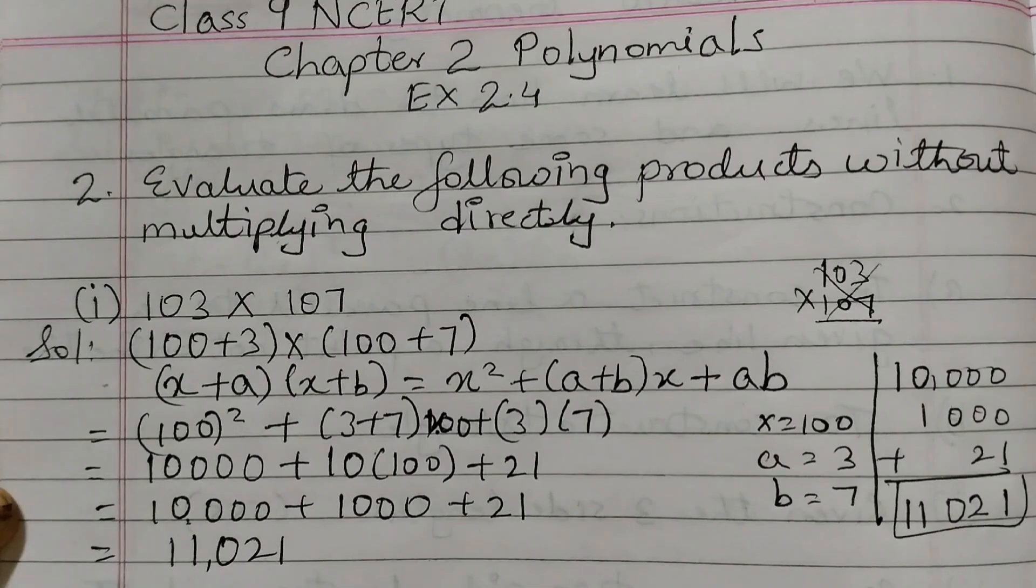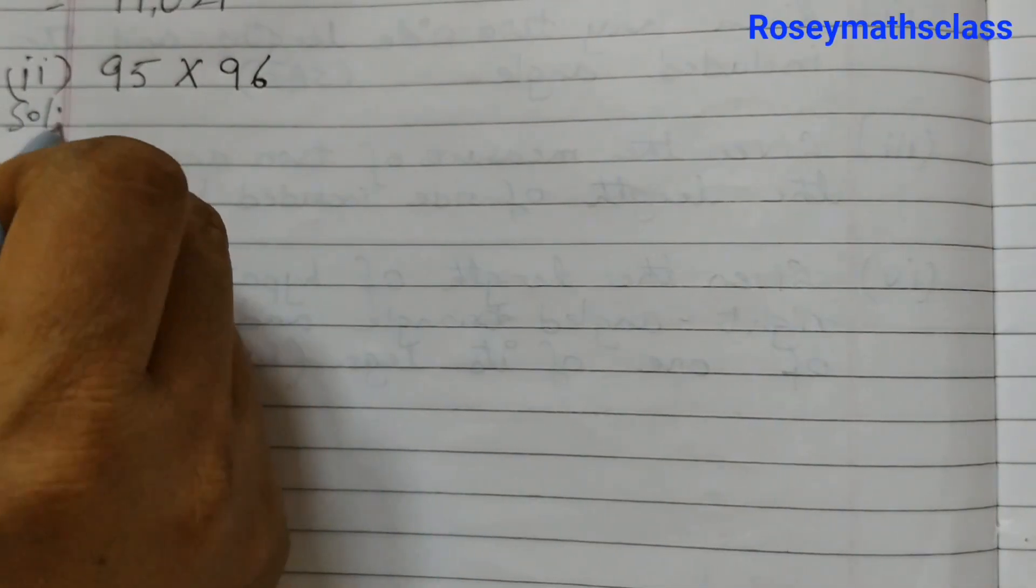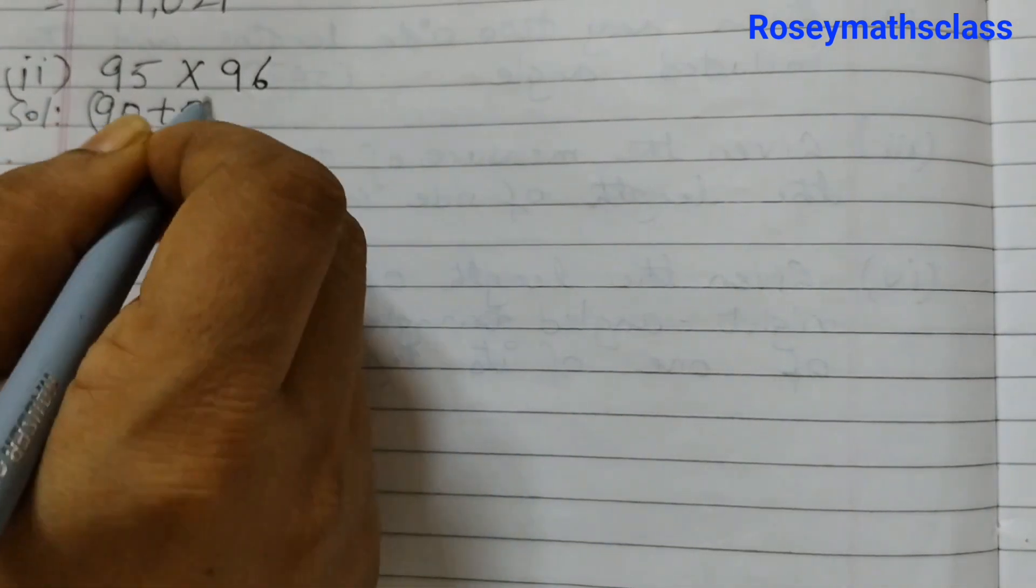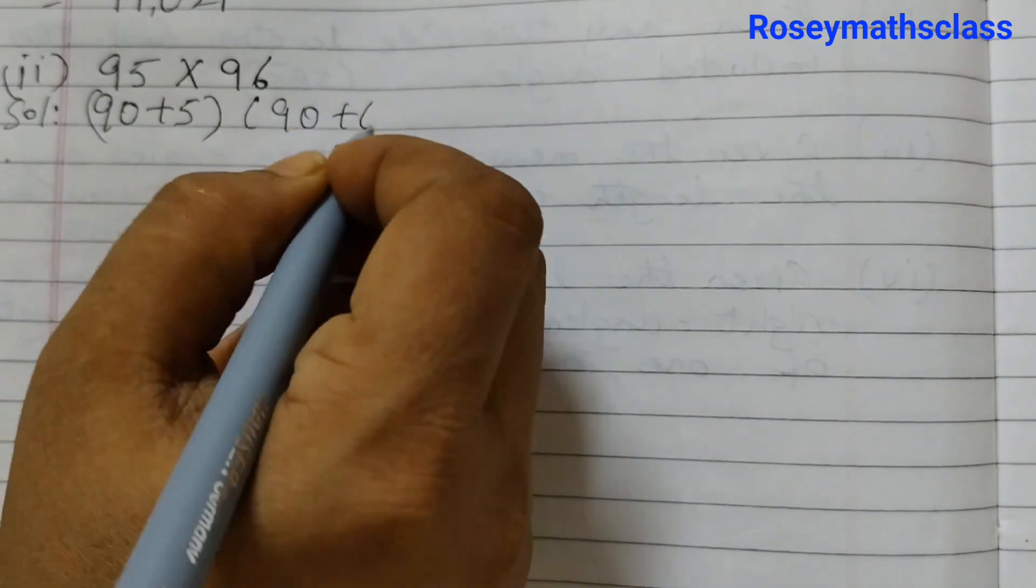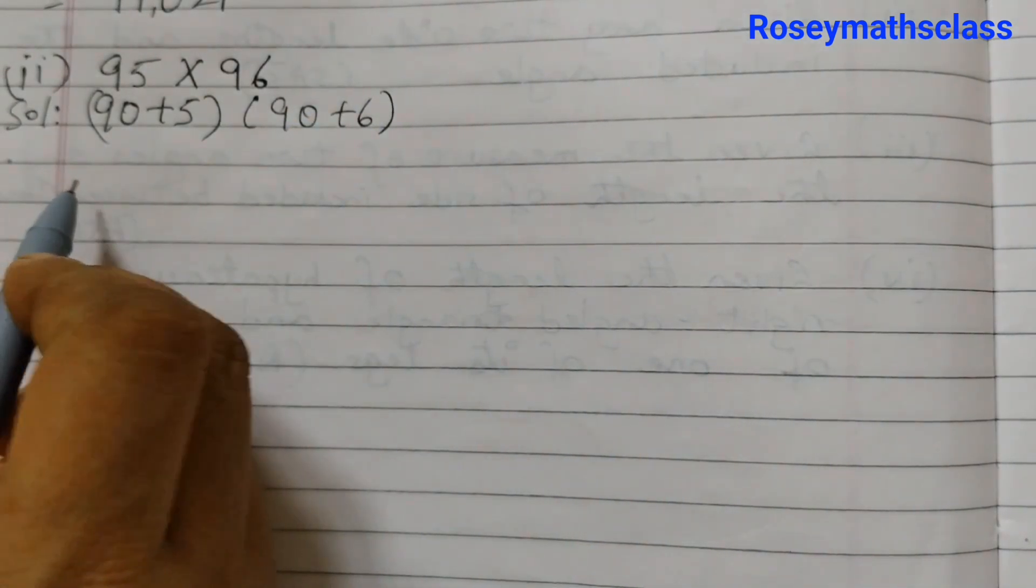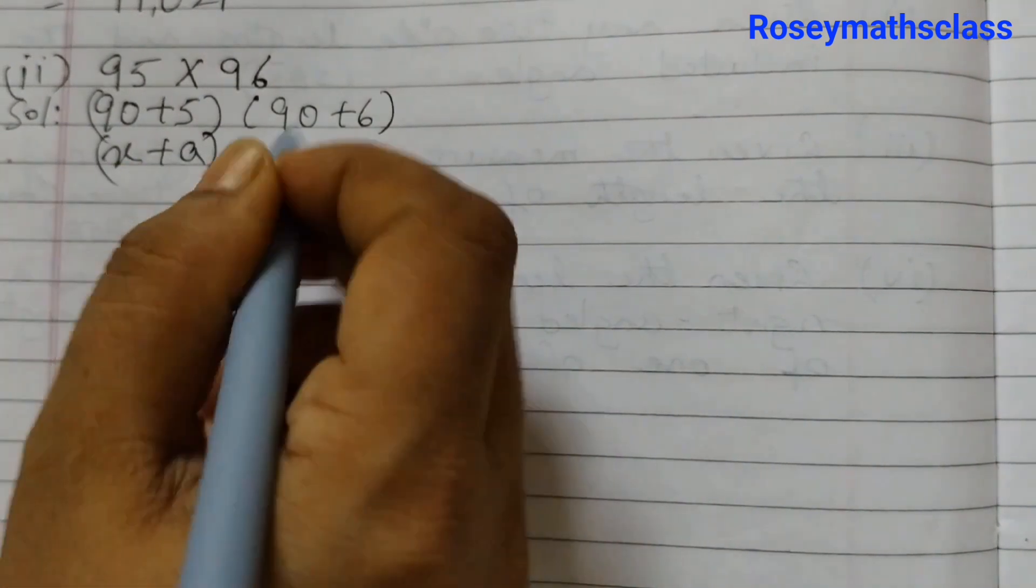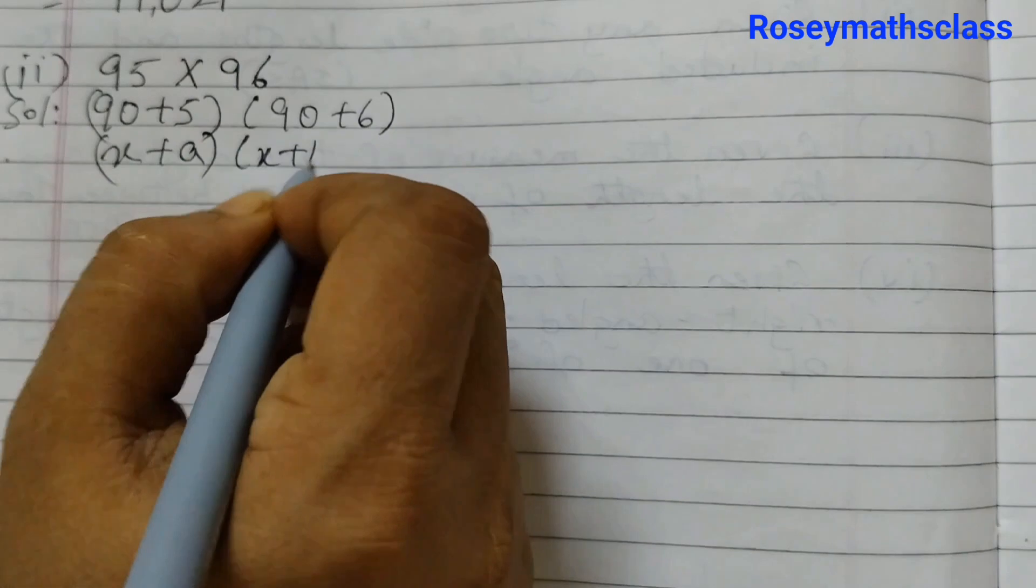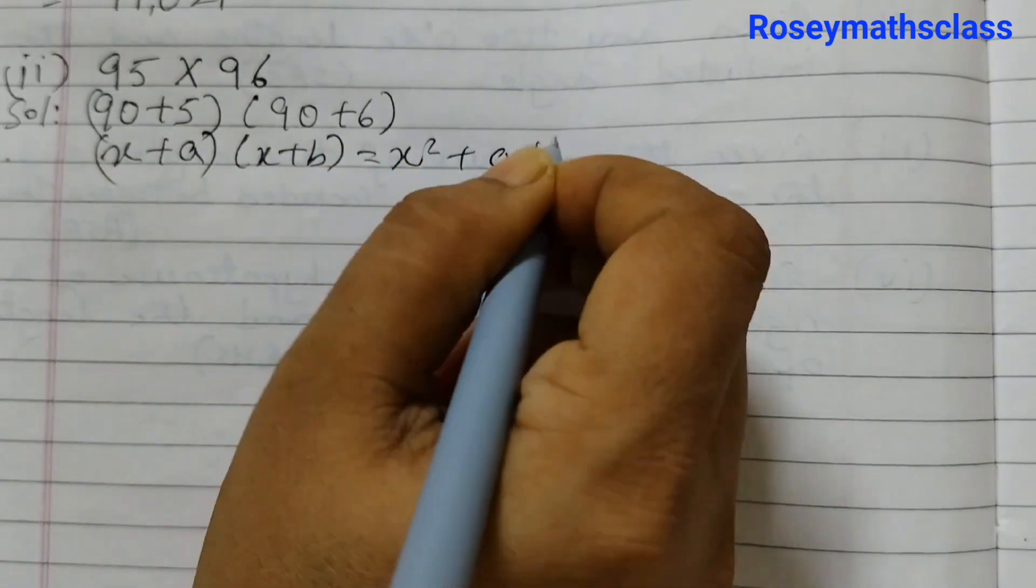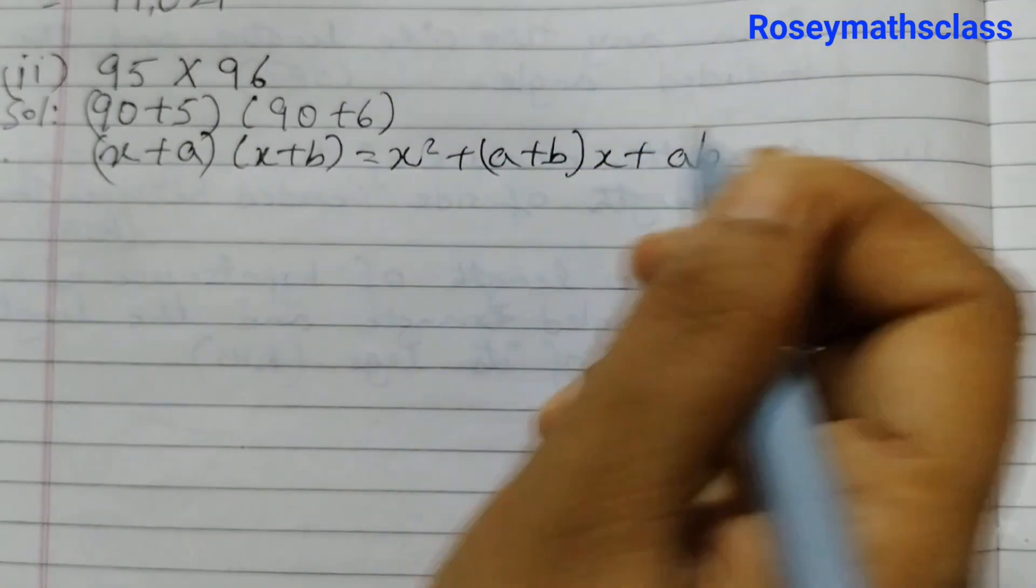Now we will do the second one, so 95 into 96. First we will write it as 90 plus 5 is 95, into 90 plus 6 is 96. The identity that we will use is (x+a)(x+b) = x² + (a+b)x + ab.